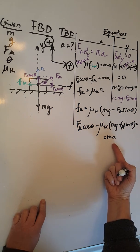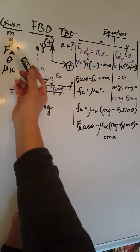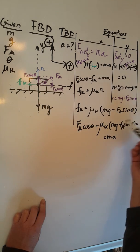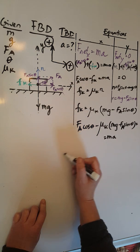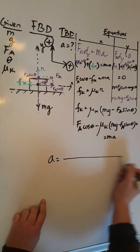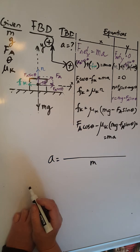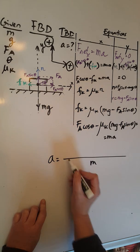And at this time, looking at my given, which are M and G and FA and theta and mu K, I have everything except for the TBD, which is what I'm looking for. And that's the acceleration. I'm ready to solve for it. Put M in the bottom of my fraction and this whole expression in the top.